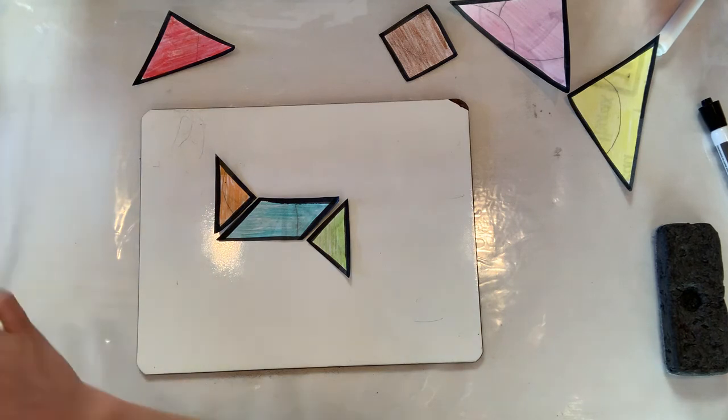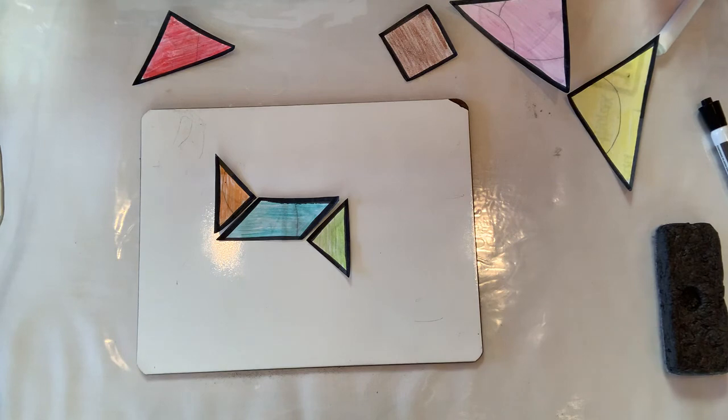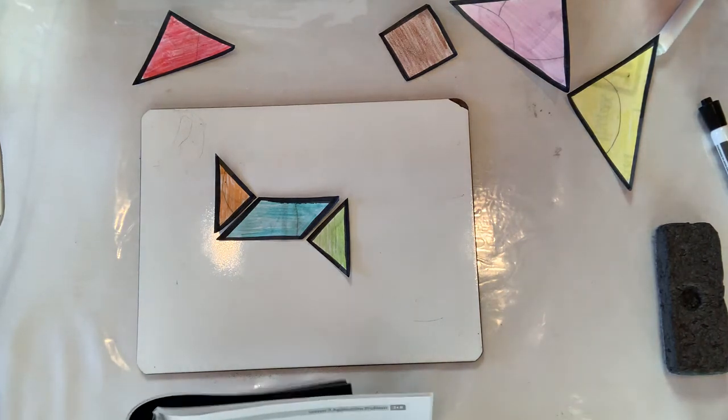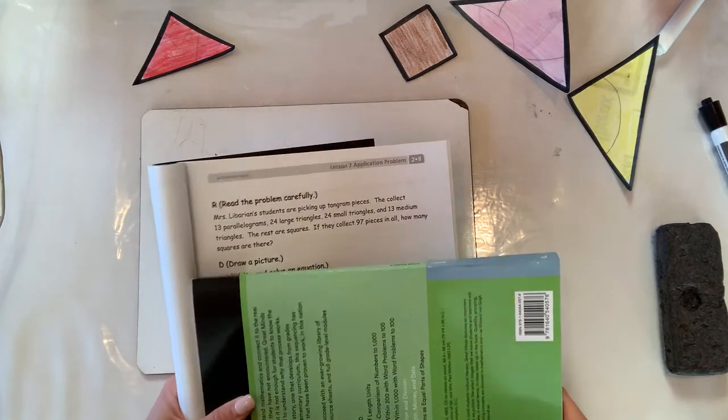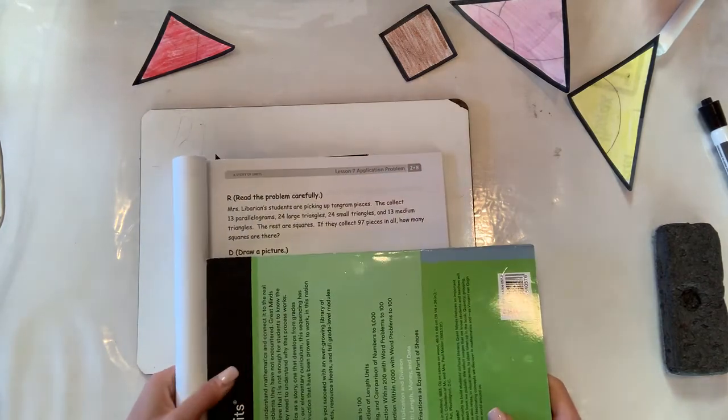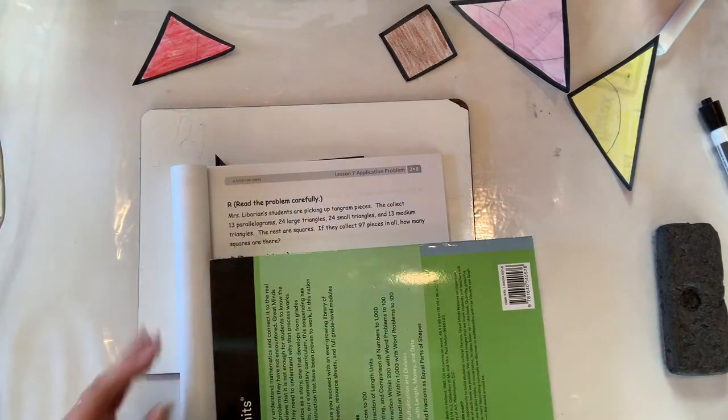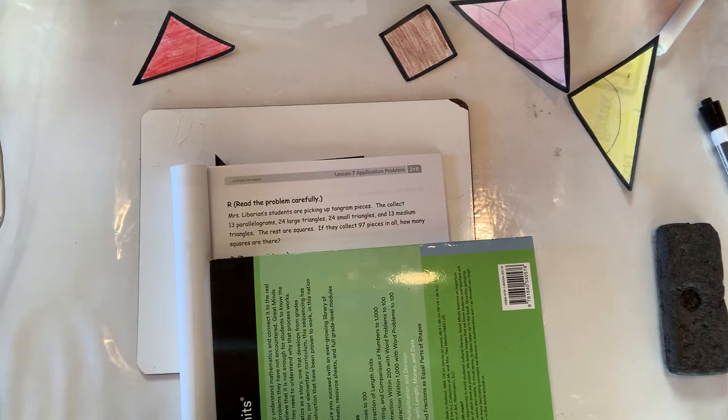Okay, and let me see if I can read it to you here. I'll cover up the answers. It says Mrs. Librarian's students are picking up tangram pieces. They collect 13 parallelograms, 24 large triangles, 24 small triangles, and 13 medium rectangles. The rest are squares. If they collect 97 in all, how many squares are there? All right, that's what you're going to be working through today.